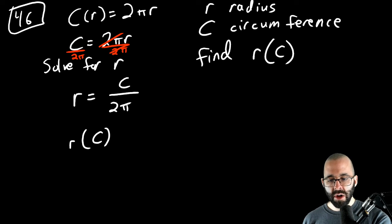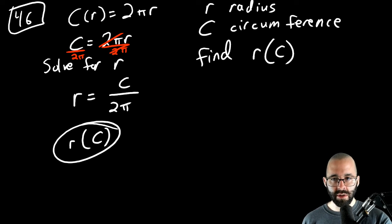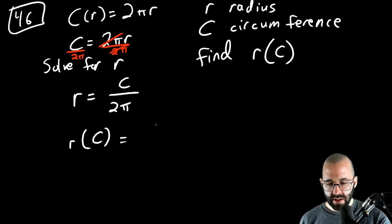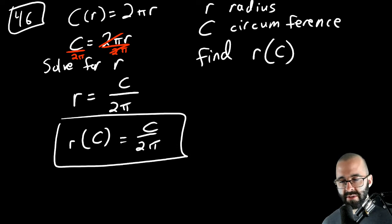This is the variable r. This is the function notation r of C. It emphasizes that this is a function of variable C. And it's the circumference divided by 2π. That's the first part of this question.